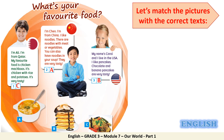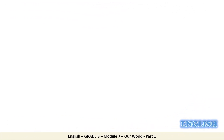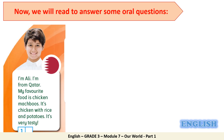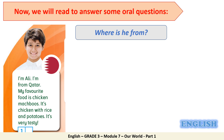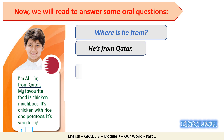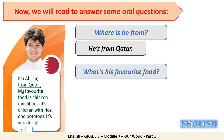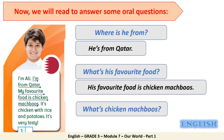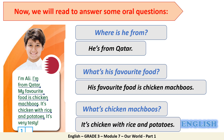Wonderful job, my dears! Now we will read to answer some oral questions. Let's start with the first text. Look at the picture — where is he from? Fantastic — he is from Qatar. What's his favorite food? Excellent — his favorite food is chicken machbous. What's chicken machbous? Fantastic — it's chicken with rice and potatoes. Excellent job, my dears!